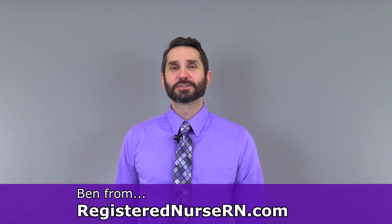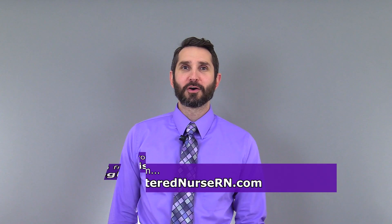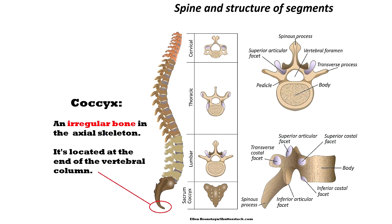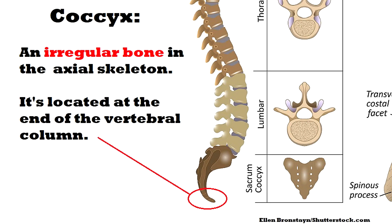Hey everyone, this is Ben with RegisteredNurseRN.com and in this anatomy lesson I am going to cover the coccyx bone, also known as the tailbone. Anatomists classify the coccyx bone as an irregular bone and it makes up the inferior portion of the vertebral column, which is part of the axial skeleton.